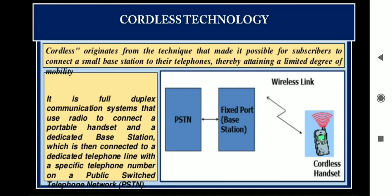The base receives the incoming call as an electric signal through the phone lines, then it converts it to an FM radio signal and broadcasts that signal. The handset then receives the radio signal from the base, converts it back to an electric signal, and sends it to the speakers where it is converted to sound.